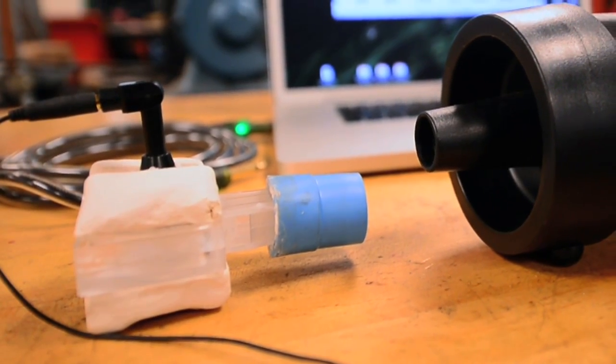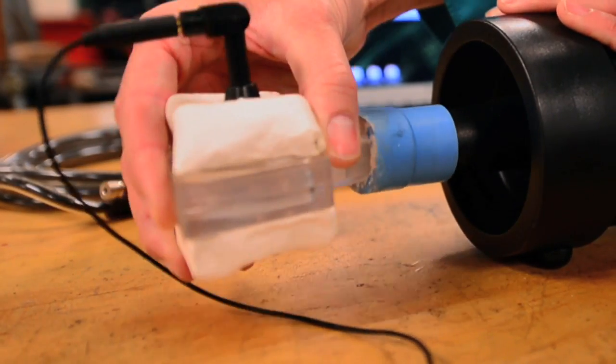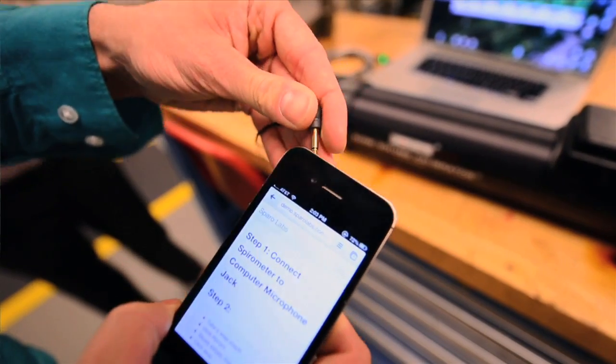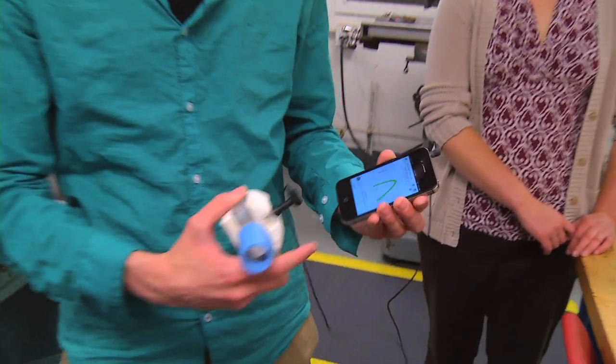So basically what a spirometer is, is a device that measures your lung function as you exhale. But our technology actually uses a microphone, so we can do that just by connecting into a simple headphone jack of an iPhone or a computer for example, and you can actually see the results in real time.